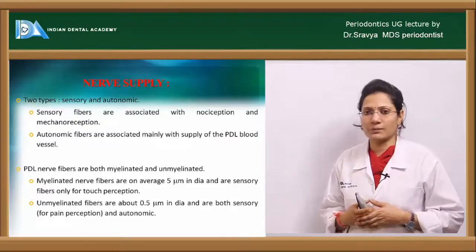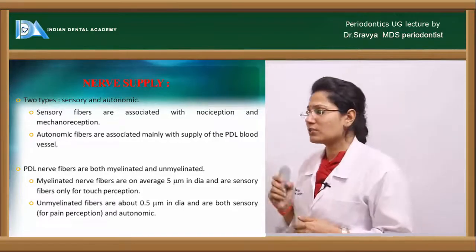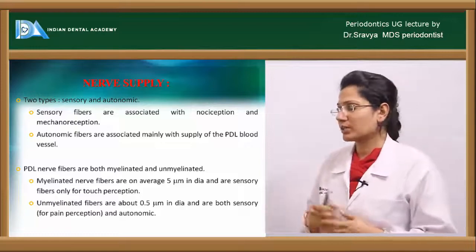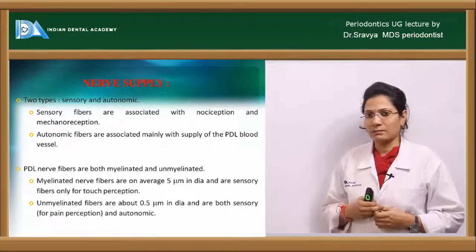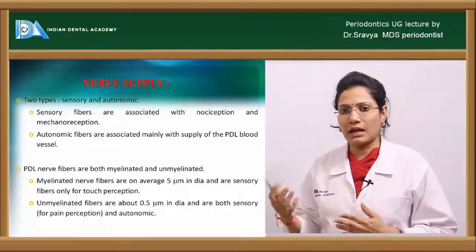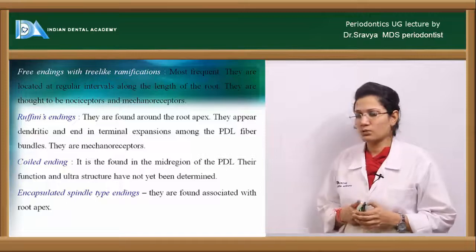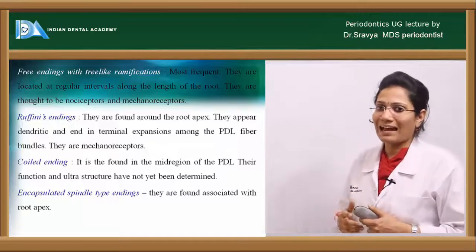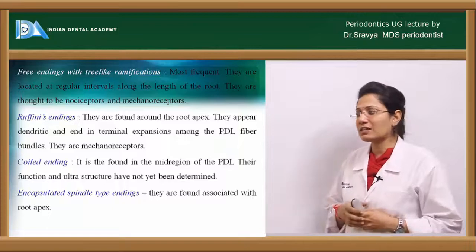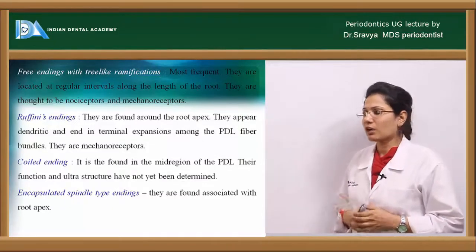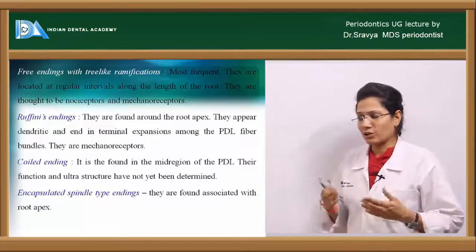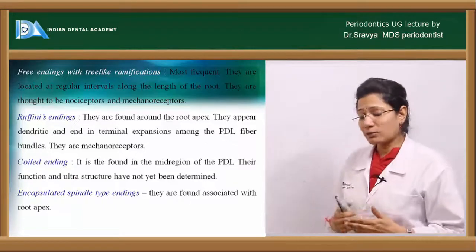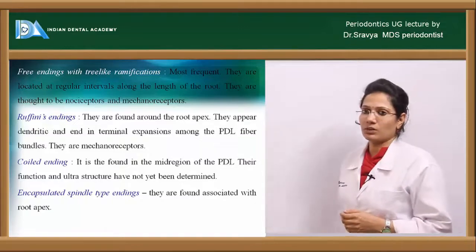The nerve supply of the PDL includes two groups: sensory and autonomic. Sensory fibers are associated with nociception and mechanoreception, whereas autonomic fibers mainly supply the PDL blood vessels. PDL nerve fibers can be both myelinated and unmyelinated. The unmyelinated group includes free nerve endings with tree-like ramifications responsible for nociception. Mechanoreceptors include Ruffini's end organs, coiled nerve endings, and encapsulated spindle-type nerve endings found associated with the root apex.